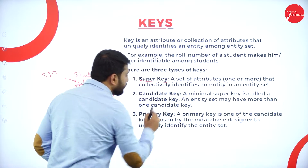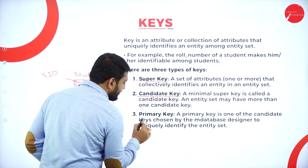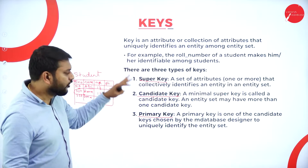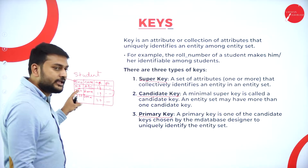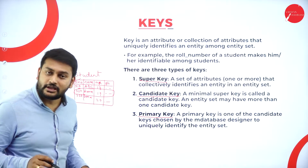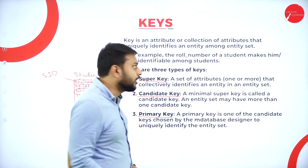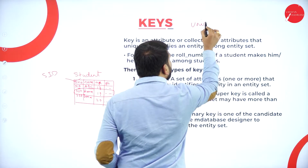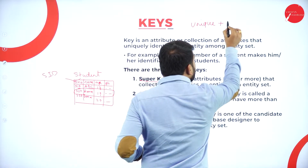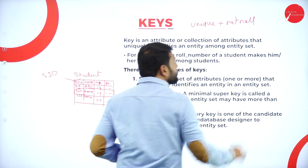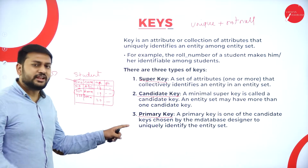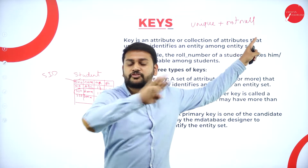That unique value is what I call a key. There are different types of keys: the first is a super key, the second is a candidate key, and the third is a primary key. Let's start from the bottom — the primary key. A primary key is a unique key that should not be null. Two things to remember: first, the value must be unique; second, it should not be null, meaning you cannot leave that column empty.